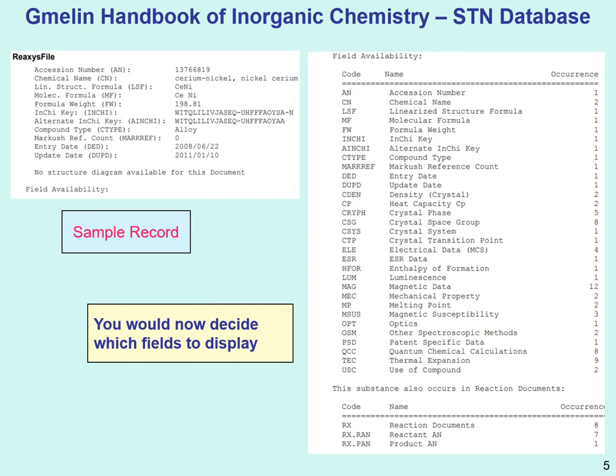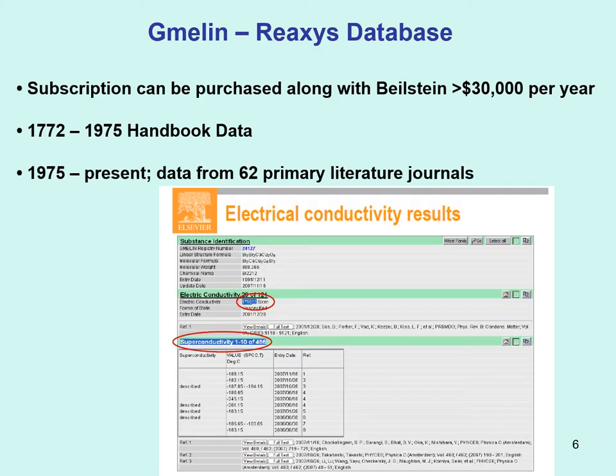Here is a sample record from the STN database — just a brief display. You would view this brief display and then decide which individual fields to display further. It costs money to display each individual field separately, so you don't want to display fields of data you don't really need.